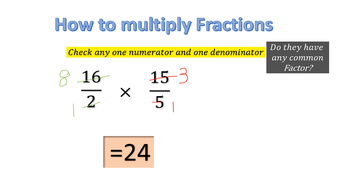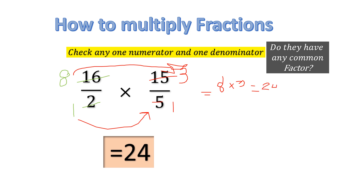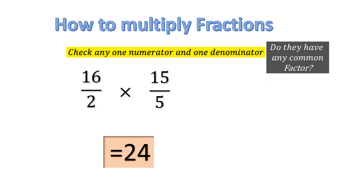Now what to do? We multiply numerator with numerator: 8 times 3 gives 24. And denominator with denominator: 1 times 1 gives 1. So our answer should be 24 over 1. But remember, if we have 1 in the denominator we just ignore it, so we can write the answer simply as 24.